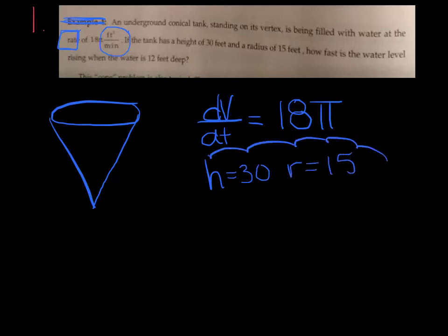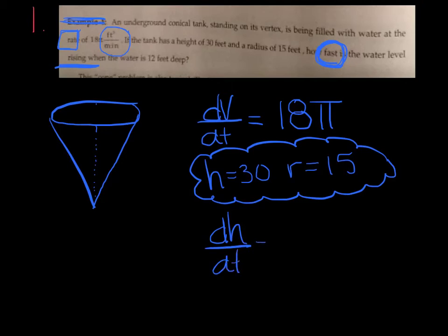And since it's being filled, I know it's becoming greater, so I'm going to say positive 18 pi. If the tank has a height of 30 and a radius of 15, there's the ratio we're going to use. How fast, so they're asking for a rate, is the water level rising? If I'm talking about how fast it's rising, am I talking about the radius or the height? Hopefully, you're saying the height. So how fast is the height changing, specifically when it's 12 feet deep? So is anything constant? As water pours into a cone, is the height always going to be the same? Clearly not. And is the radius always going to be the same? You can see that it changes as you have more or less water. So there is no constant here. There's nothing you can plug in before.